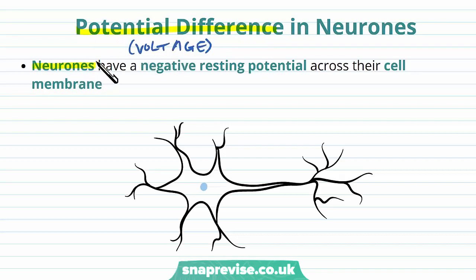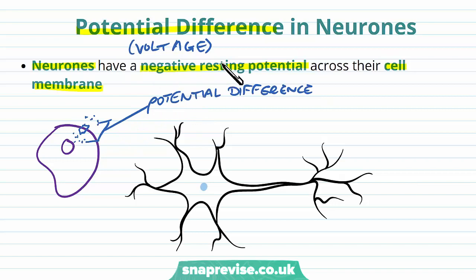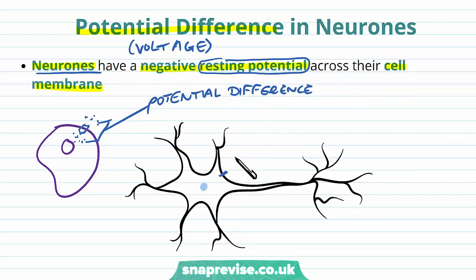Neurons, which are the cells of the nerve system, have a negative resting potential across their cell membrane. All cells of the body have a membrane around them, and across that membrane we find a particular electrical setup based on different ions inside and outside of the cell. The difference in electrical potential is called the potential difference. When the cells aren't really doing anything, we call this a resting potential.